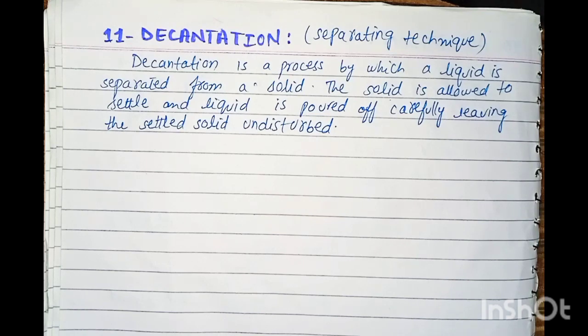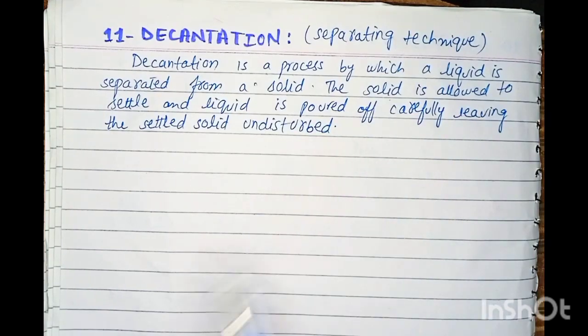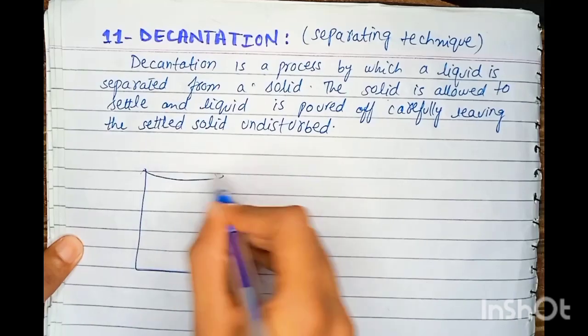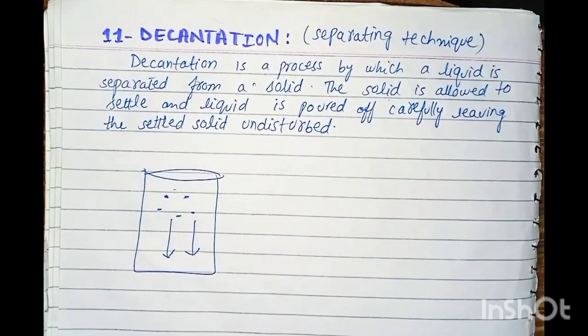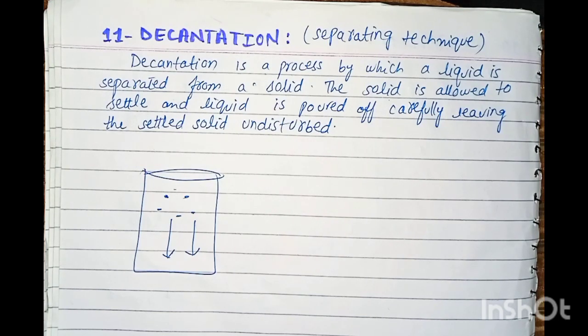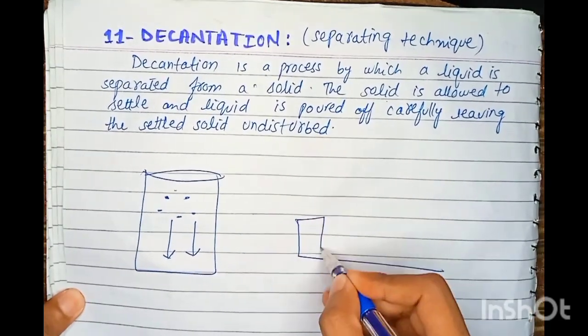The decantation process is when the liquid is separated from a solid. The solid is allowed to settle. Solid being denser, what will happen? It will be allowed to settle with time, due to density. Now what will happen? The liquid will be separate and the solid will be separate. In this case, we will separate the liquid.